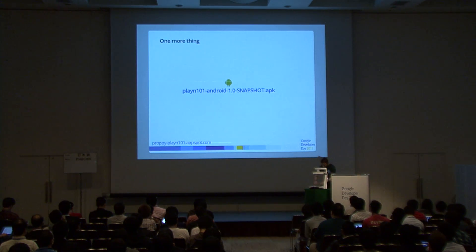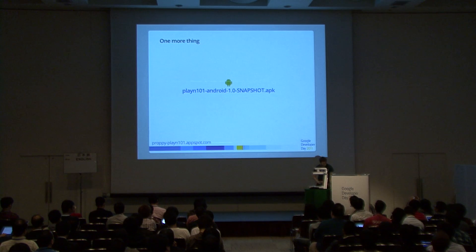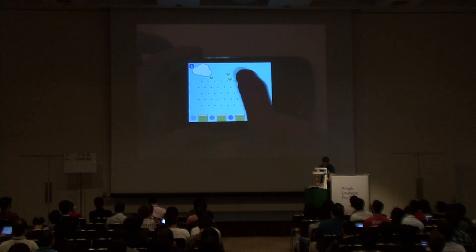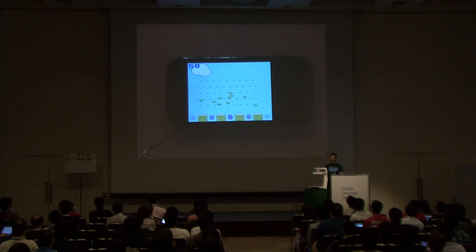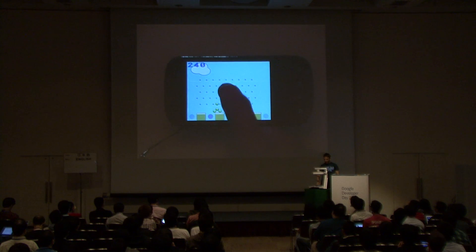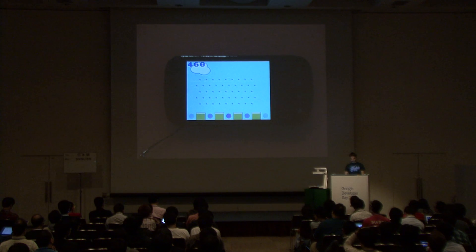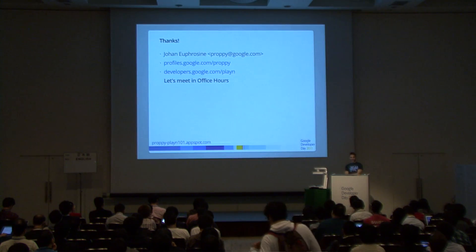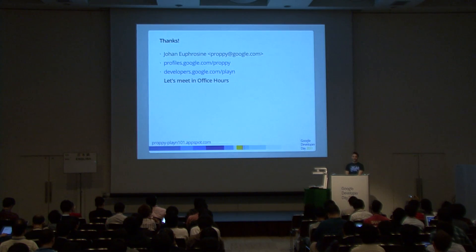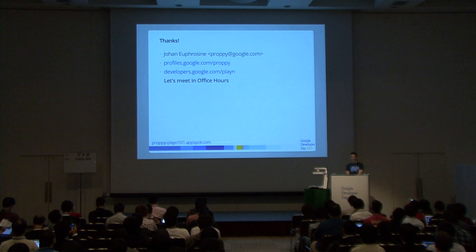One more thing — this also works on Android. Same code: using PlayN, we were able to deploy the same Java code and compile it to HTML5, Android, and native Java for development. If you were following this presentation, you can get the APK and play the game yourself. Thank you for attending — please visit developer.google.com, and let's meet at the office hours outside if you have questions.